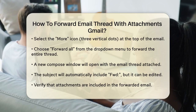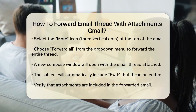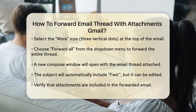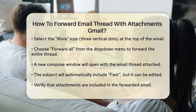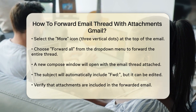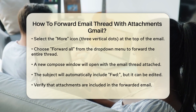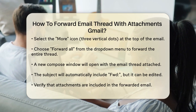You'll see all the emails in the chain listed below the main body of the email. By default, Gmail will prefix the subject with FWD to indicate that the message has been forwarded, but you can edit this if you need to.